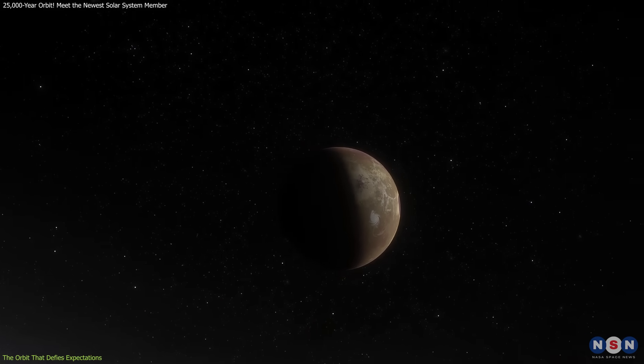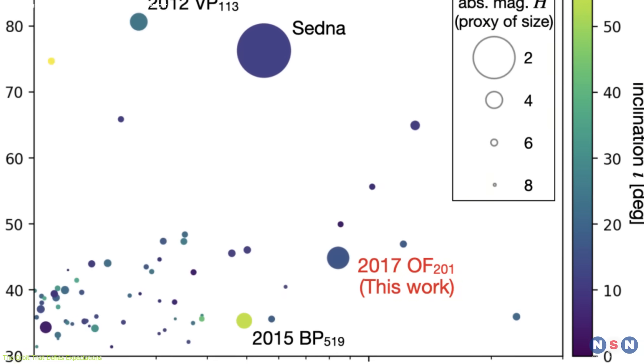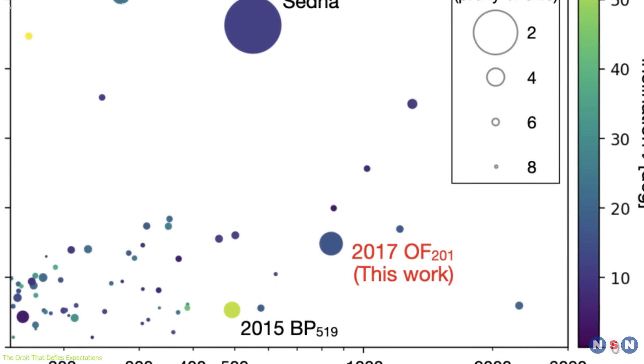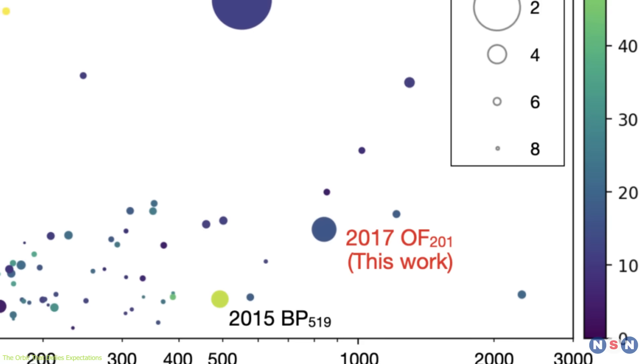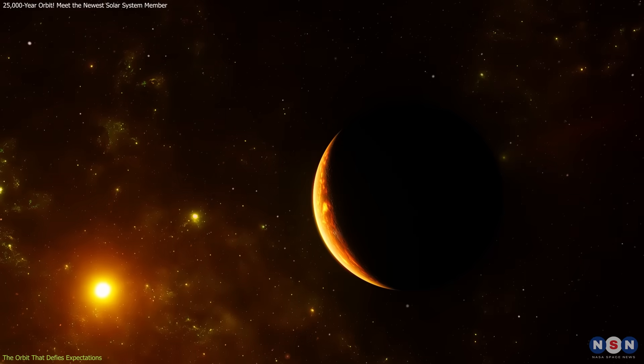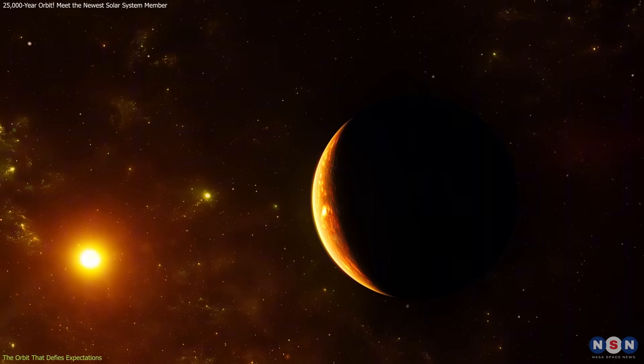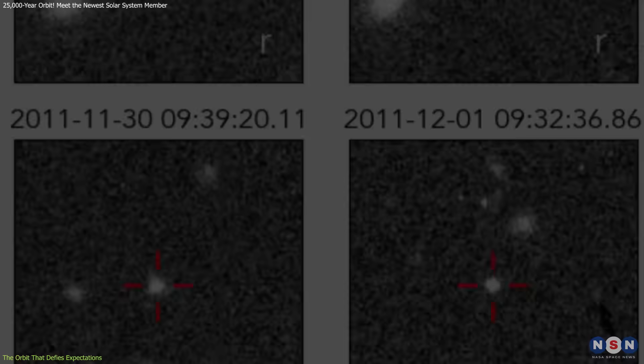Given its location, it's no surprise that detecting this TNO was an immense challenge. The object is visible from Earth only about 1% of the time during its orbit.